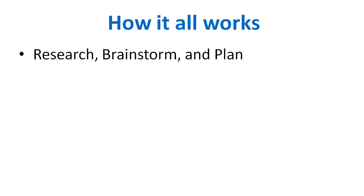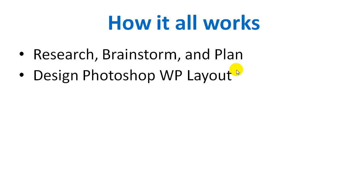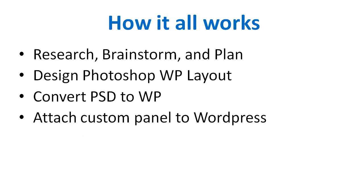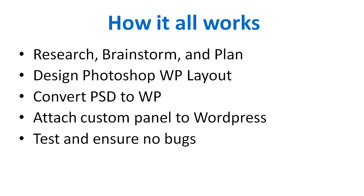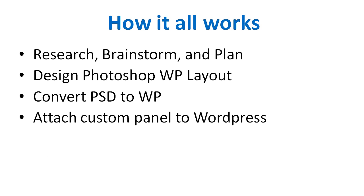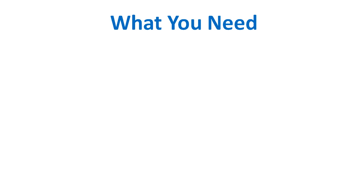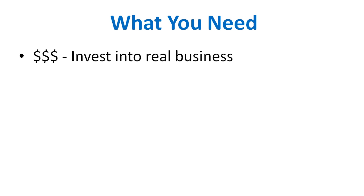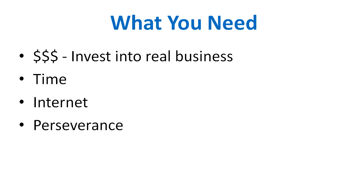Basically here's how it all works: you research, brainstorm, and plan your WordPress theme; you design the Photoshop WordPress layout; you convert the Photoshop to WordPress; you attach the custom panel; you test to ensure there are no bugs; and then you release it. Here's what you're going to need — it does cost some money to invest in the design, the conversion, and building the control panel. It takes time; this is not something you can do overnight, unless you go with option one. You also need internet access and perseverance. With that said, let's move on to video number two.